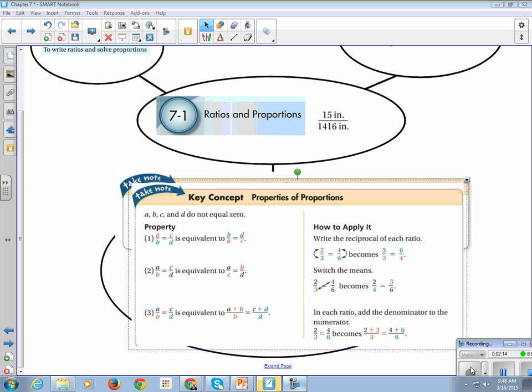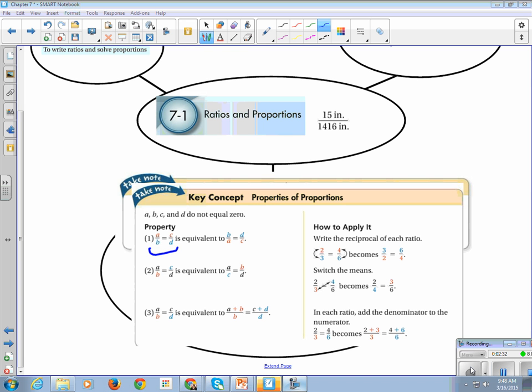One of the properties says that I can take and flip. As long as I flip both sides. So if I have A over B equals C over D, I can completely flip it and go B over A equals D over C.